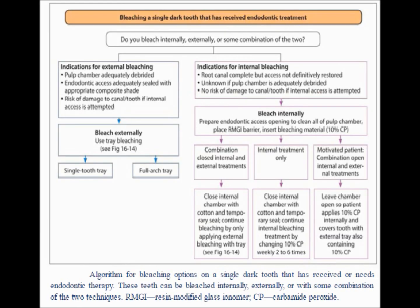When discoloration is a combination of internal and external, combination treatment can be done by: A. Intracoronal bleaching and in-office bleaching, placing hydrogen peroxide on the facial surface with a heat source. B. Intracoronal bleaching and home bleaching using a night guard tray and hydrogen peroxide gel.